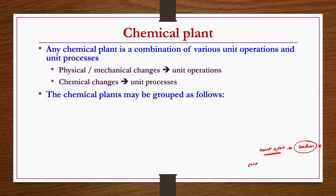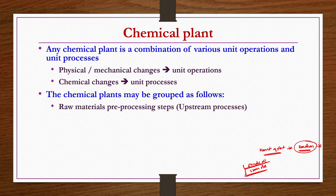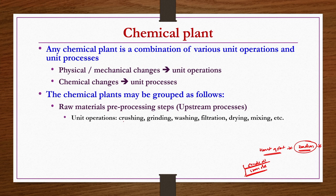So we do some kind of processing of the reactants. Since they occur before the reaction, these are known as upstream processes or raw material pre-processing steps. Operations include crushing of the ore, grinding, washing of impurities, filtration, separation, drying, and mixing. All these — crushing, grinding, washing, filtration, drying, mixing — are physical or mechanical changes only.